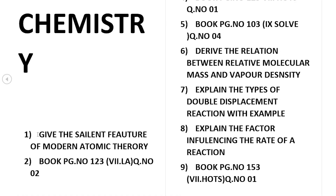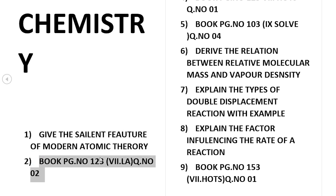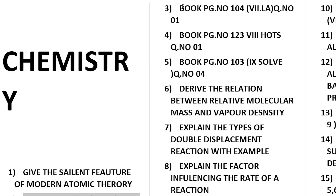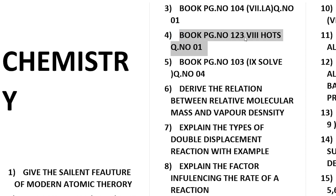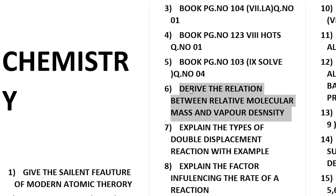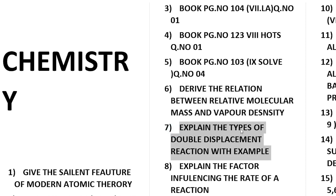Let's talk about chemistry. Give the salient features of modern atomic theory. Page number 123, question number 2. Page number 14, question number 1. Derive the relationship between relative molecular mass and vapour density. Explain the types of double displacement reactions with examples. Explain the factors that influence the rate of reaction.